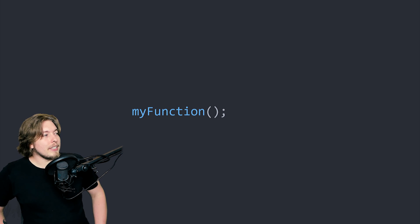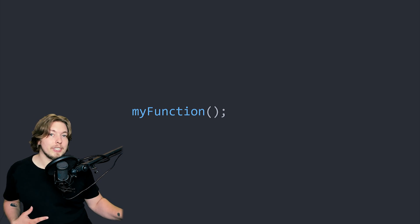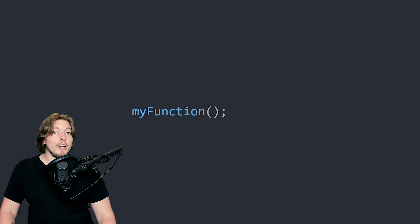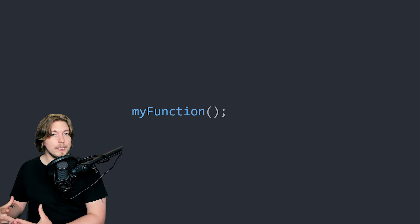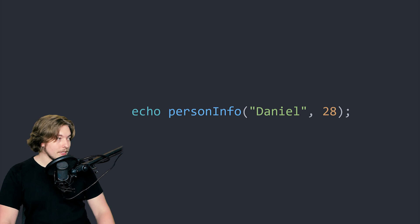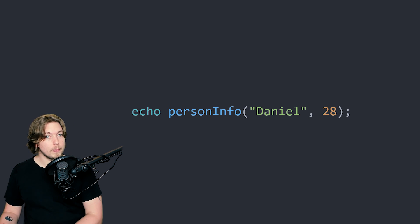We simply reference a function we created and reuse it repeatedly. The question is how do we actually use a function inside our code? If we already have a function — whether created by us or a built-in function — we can reference it by calling the name of the function followed by a pair of parentheses. The parentheses are used to pass data into the function. For example, in a function called person_info, I passed in two parameters: a string called Daniel and a number 28.